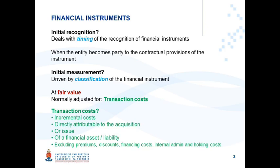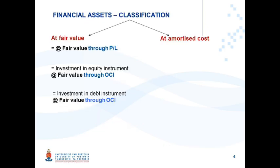Transaction costs exclude premiums, discounts, financing costs, and internal admin and holding costs. Under financial assets, for classification purposes, we distinguish between two main measurement bases: at fair value and at amortized cost.